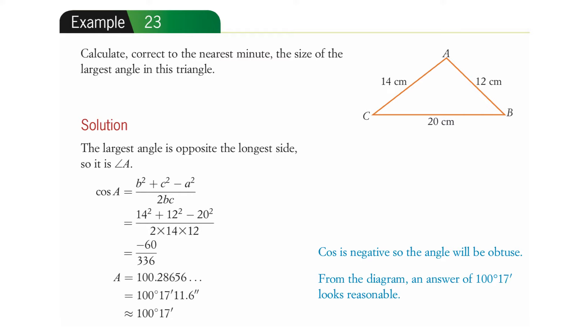So it's going to be using this formula here. 14 squared plus 12 squared minus 20 squared on the top. And on the bottom is 2 times 14 times 12. And that came out as that. The answer was 100.28656, and in minutes and seconds.